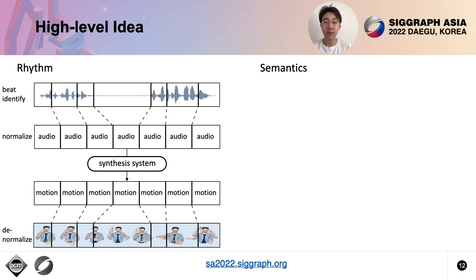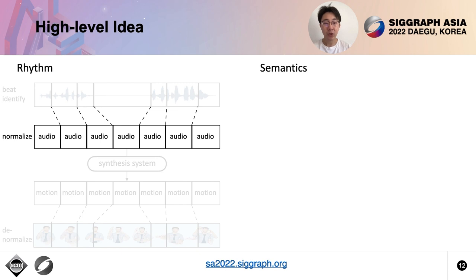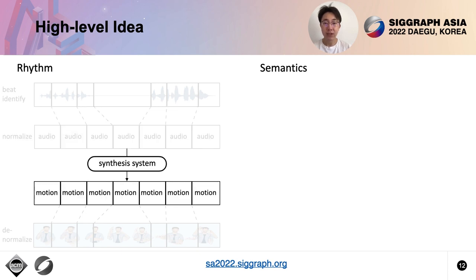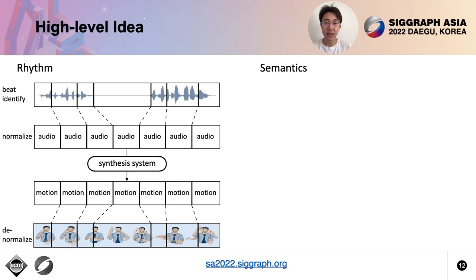For rhythm, we develop a rhythm-based normalization pipeline. We first identify audio beats, segment and normalize the speech into canonical blocks, generate gestures for every block, and align the generated motion to the rhythm of the speech. The framework provides the gesture model with an explicit hint of the rhythm, allowing the model to learn the pattern of gesture beats efficiently.